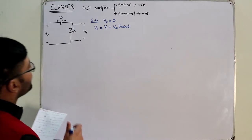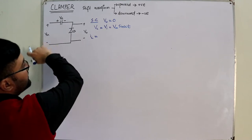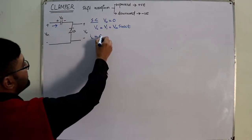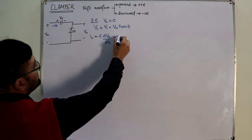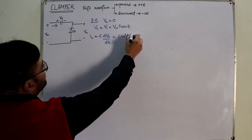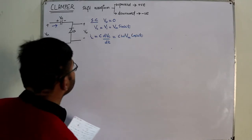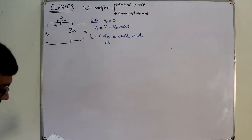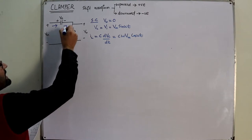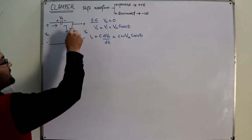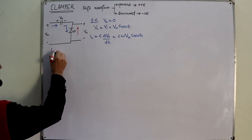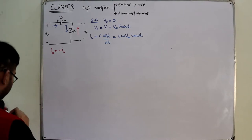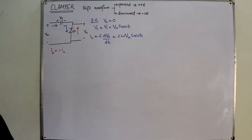Now I look at the current through the diode. The current through the capacitor would enter the positive terminal. Ic = C·dVc/dt, which equals C·ω·Vm·cos(ωt). From this you can find the diode current — this current goes into the diode, but it is entering from N to P. The diode current can only flow from P to N, so Id = −Ic.